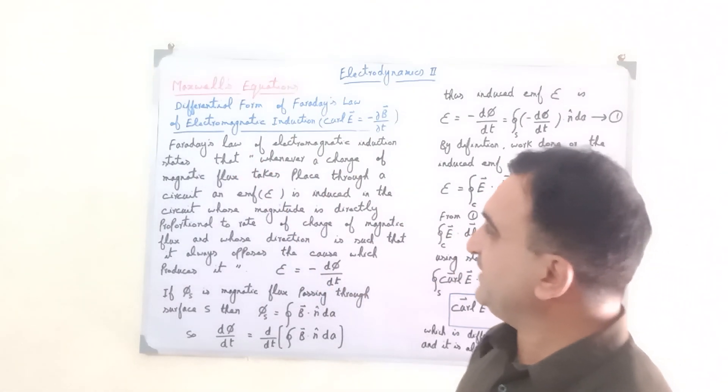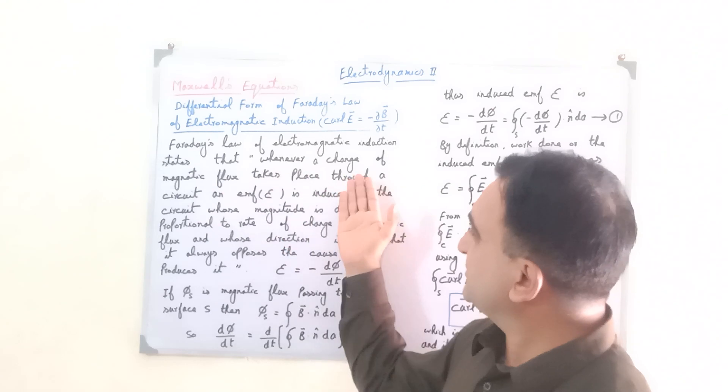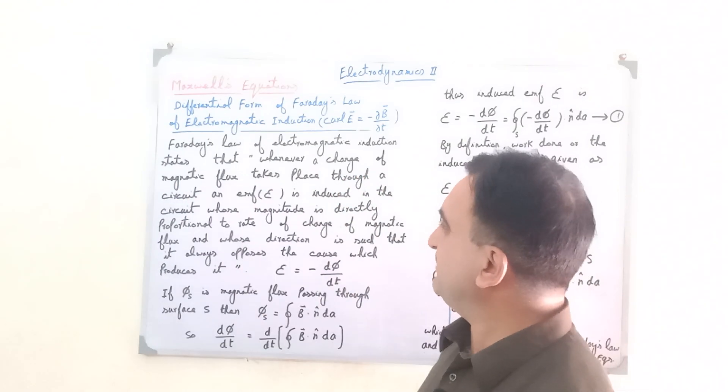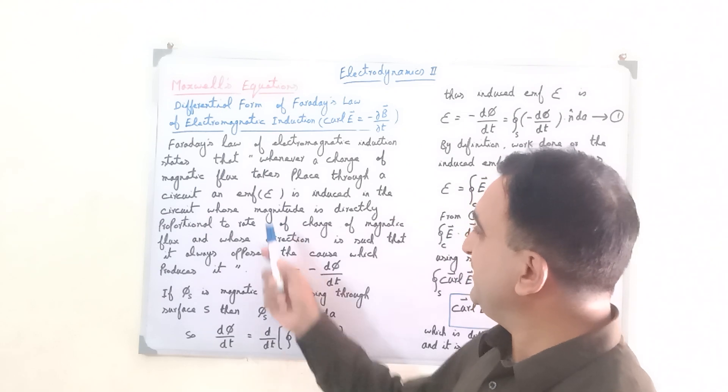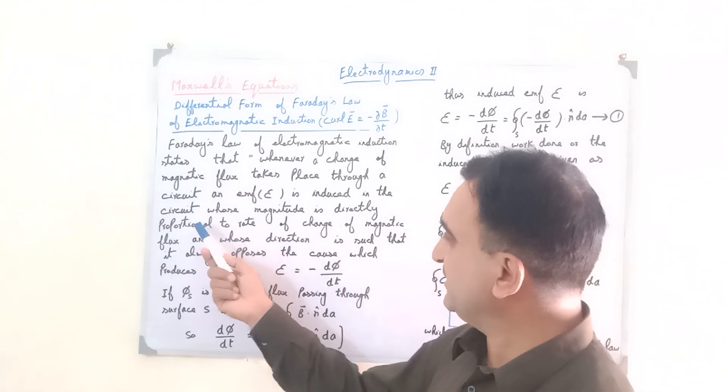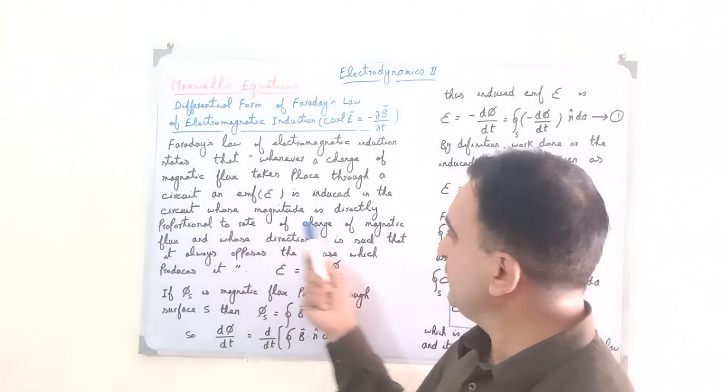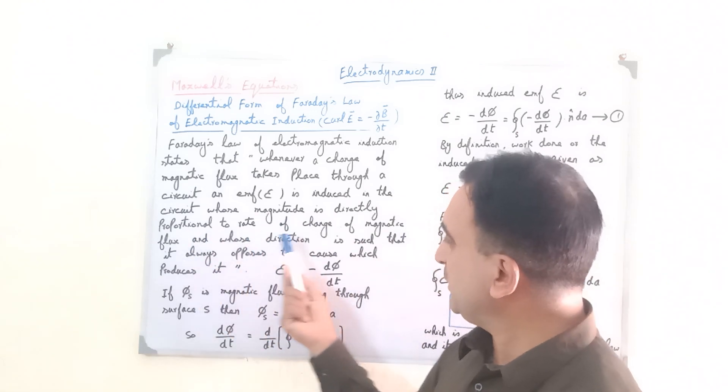Its statement is that whenever a change of magnetic flux takes place through a circuit, an EMF E is produced in the circuit whose magnitude is directly proportional to rate of change of magnetic flux.